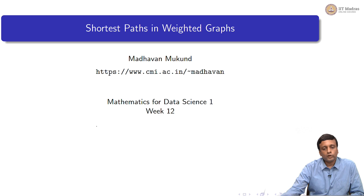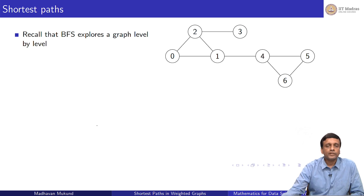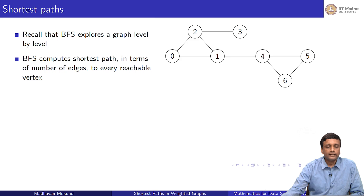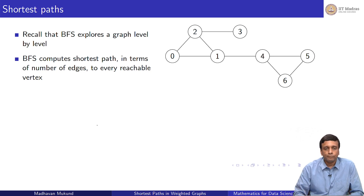Now let us look at a new type of graph called a weighted graph. Remember that in a graph like this, the systematic way to explore it is breadth first search. Breadth first search explores the graph level by level, and therefore discovers the vertices reachable from the starting vertex at successively longer distances. Therefore, BFS computes the shortest path in terms of number of edges to every reachable vertex.